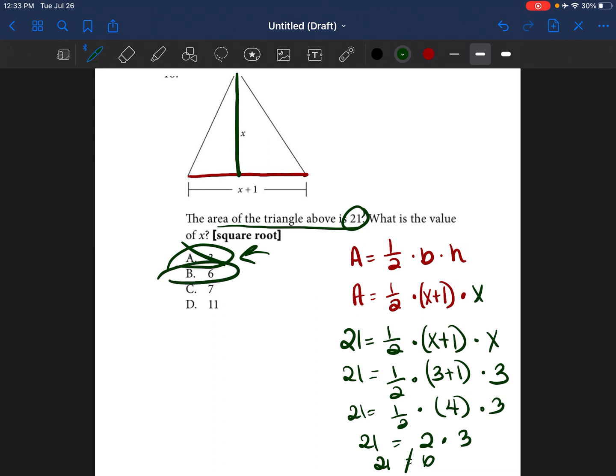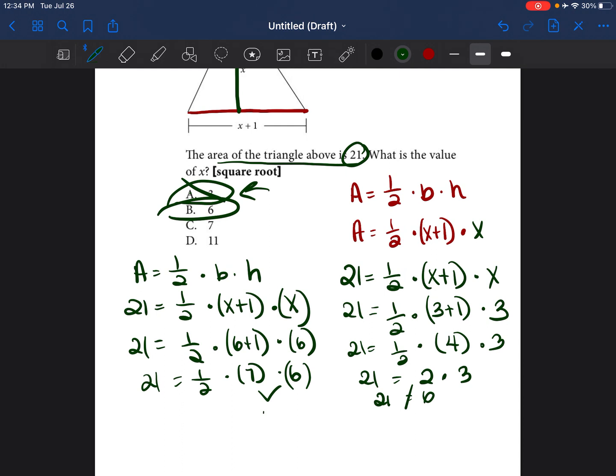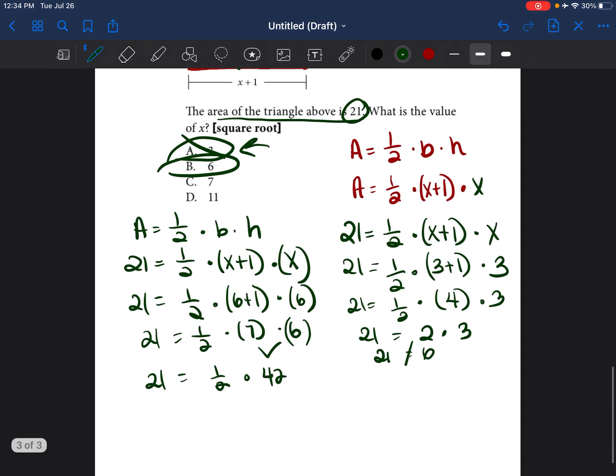And then I'm going to go ahead and try to plug in B. So A is equal to one half base times height. The area is 21. One half times x plus 1 times x. If we're going to plug in and instead of writing x, we're going to write 6 plus 1 times 6. So one half times 7 times 6 equals 21. 7 times 6 is 42 times half equals 21. One half of 42 is 21. So then we know that B is the correct choice.